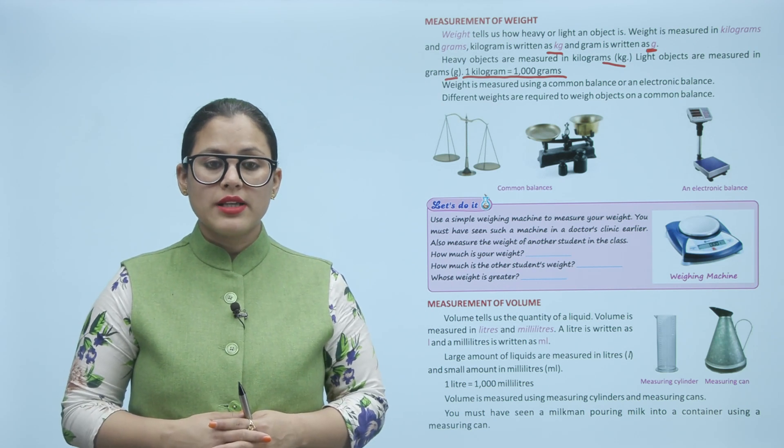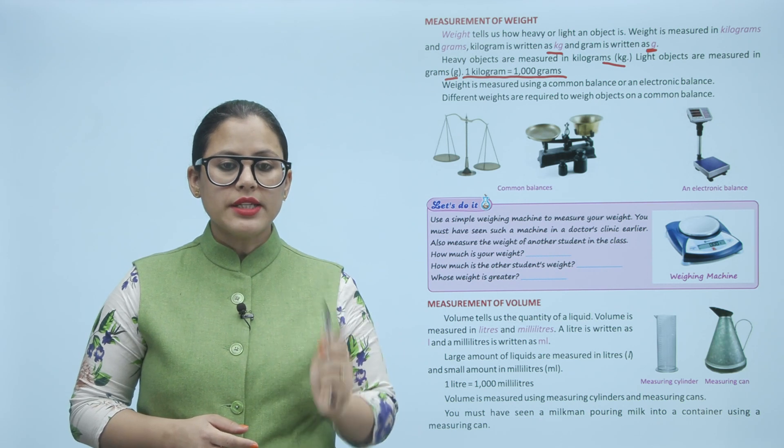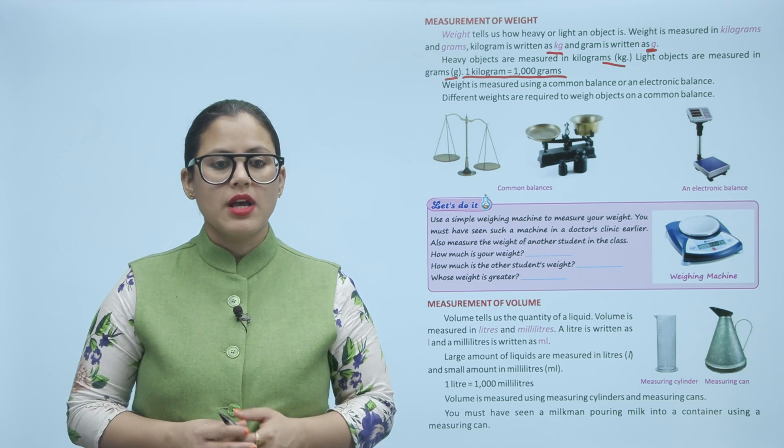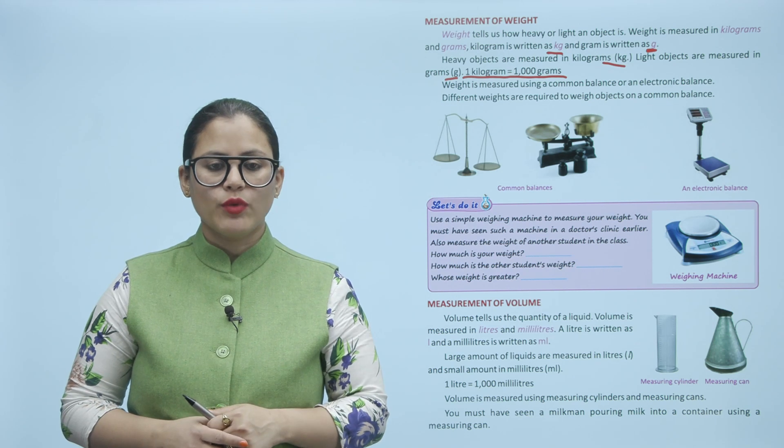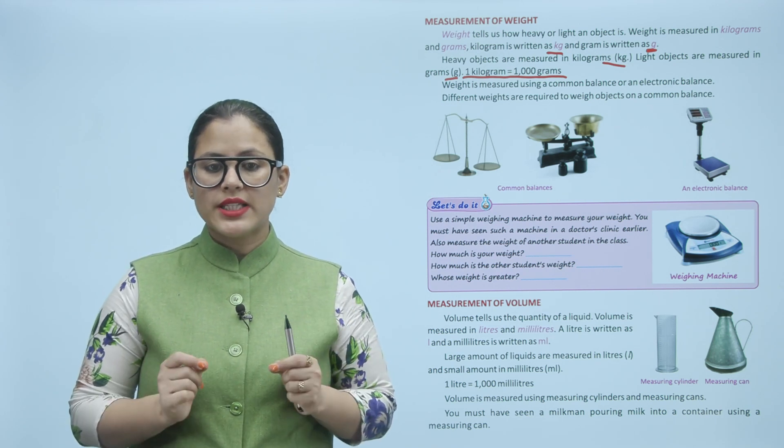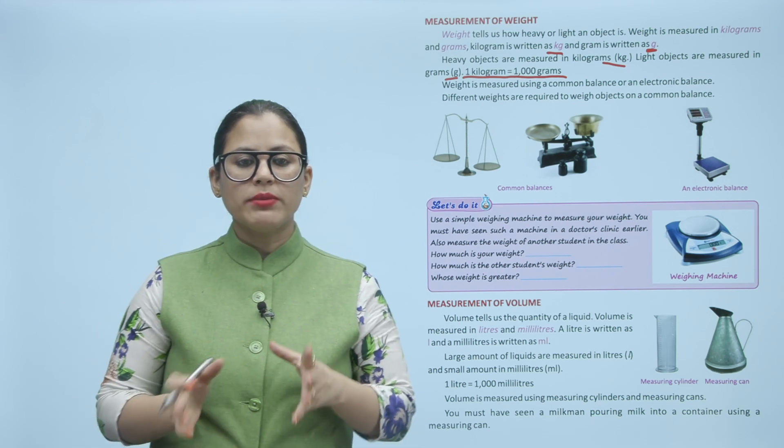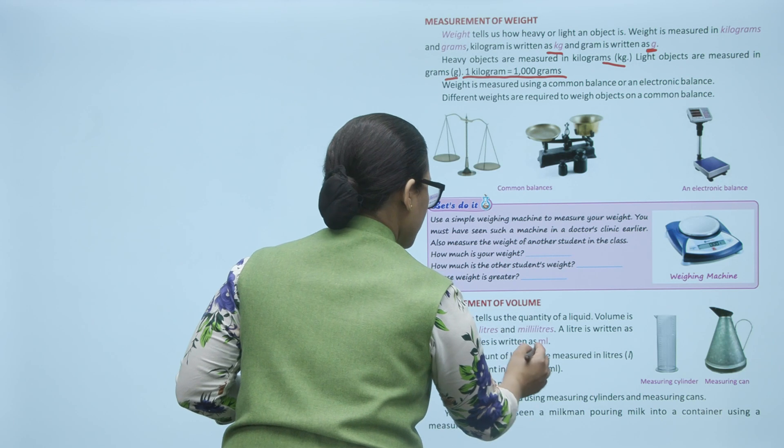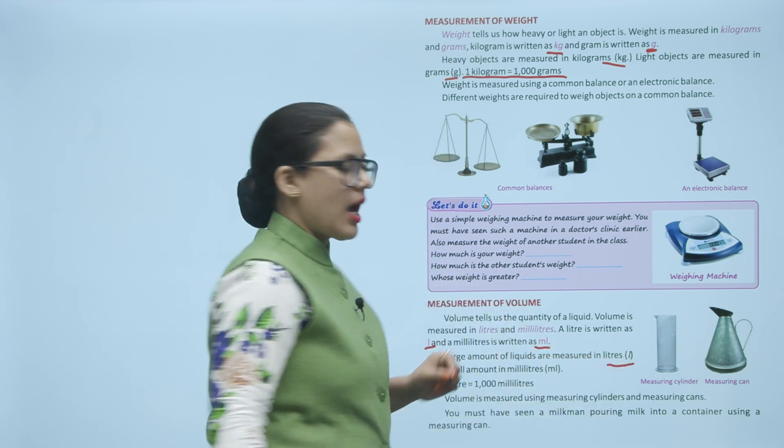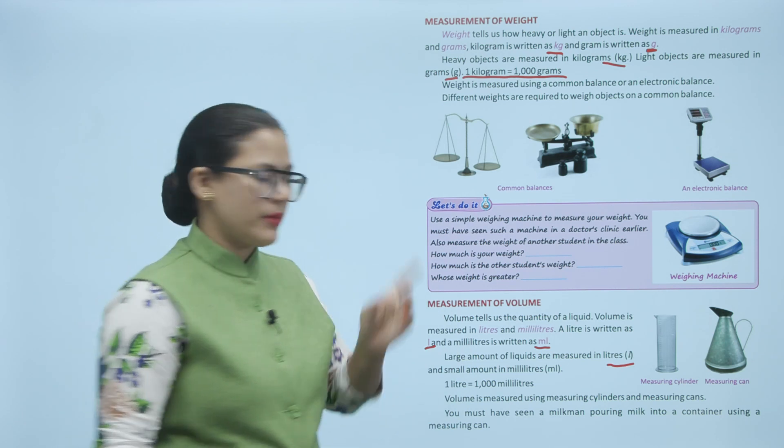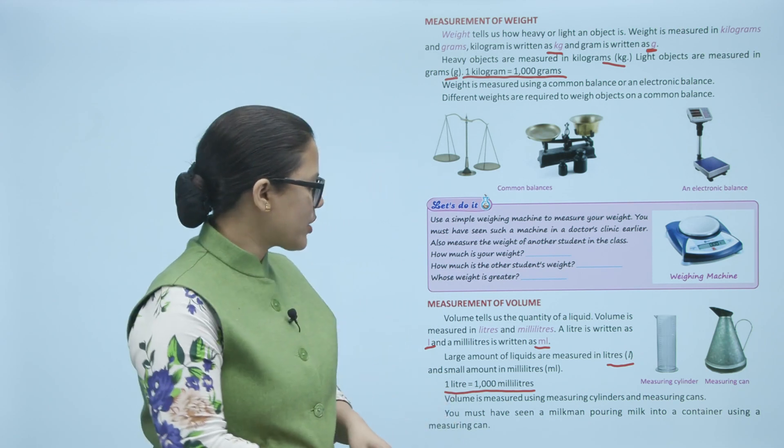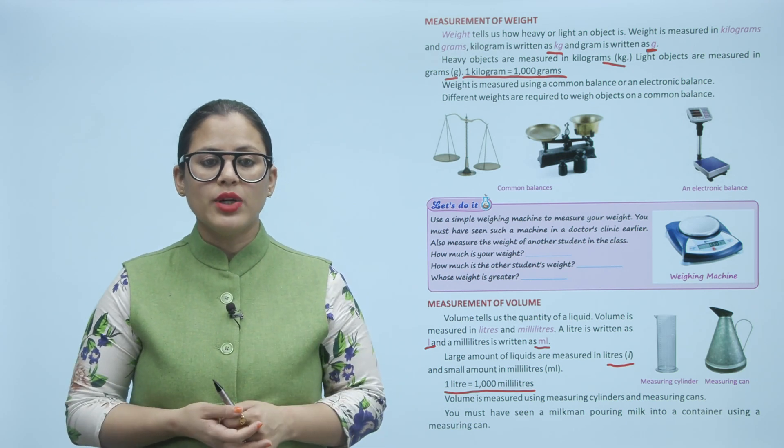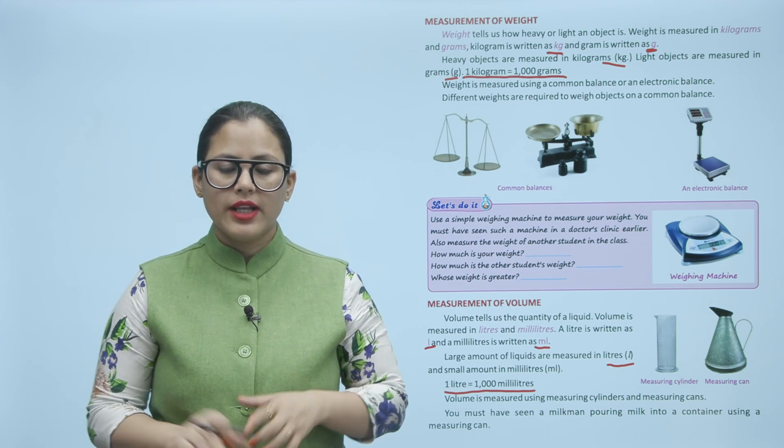Measurement of volume. Volume tells us the quantity of a liquid. Volume is measured in liters and milliliters. A liter is written as L and a milliliter is written as ml. Large amount of liquids are measured in liters and small amounts in milliliters. 1 liter is equal to 1000 milliliters. Volume is measured using measuring cylinders and measuring cans. You must have seen a milkman pouring milk into a container using a measuring can. Volume tells us the liquid quantity. Large amount of liquid is measured in liters and if there is less quantity, we use milliliter. One liter equals a thousand milliliter. Like measuring cylinder, measuring can, these are used to measure liquid. Like you must have seen milkman has a measuring can to pour one liter, two liters of milk.